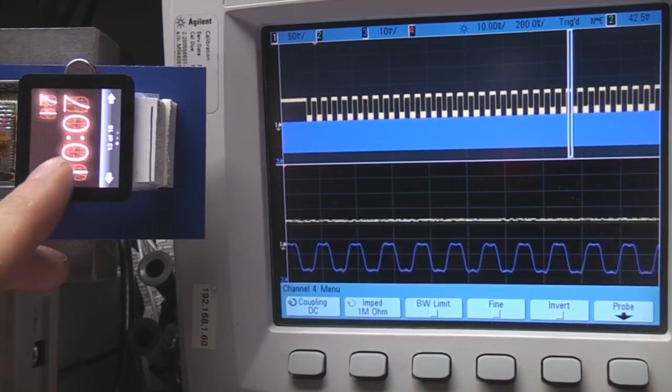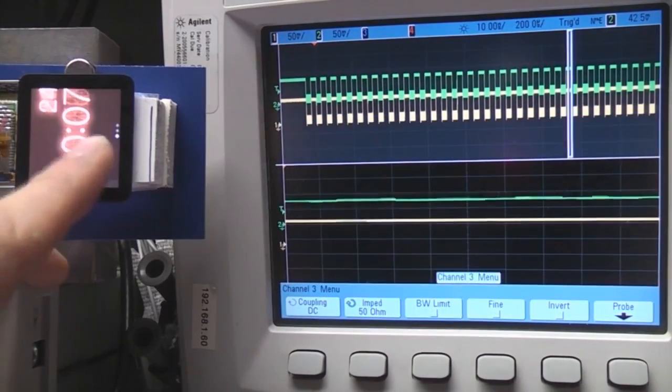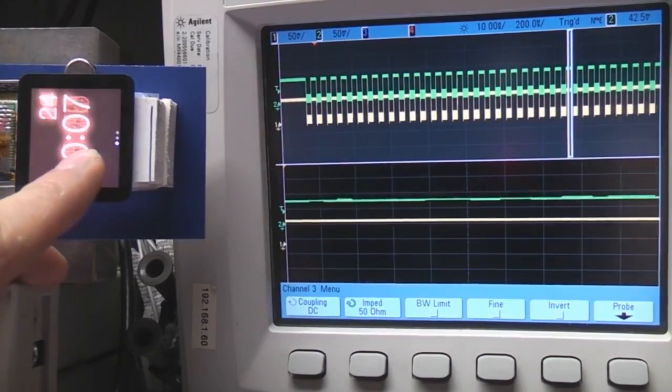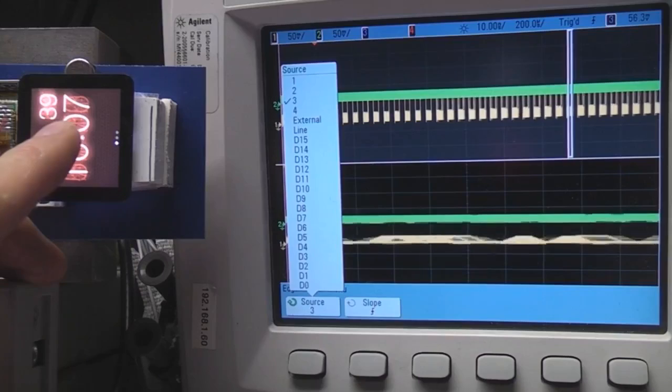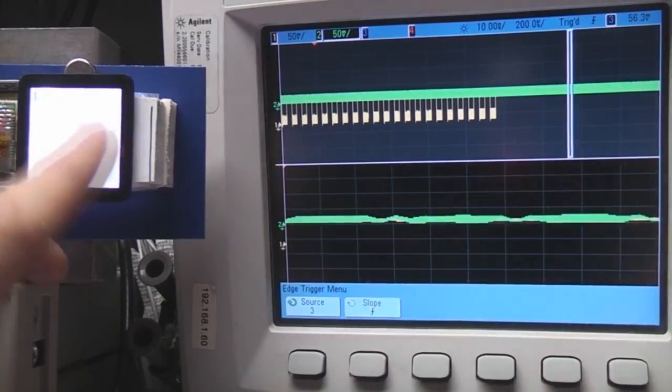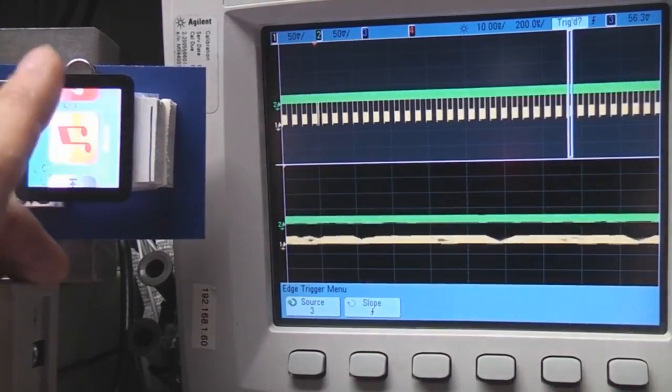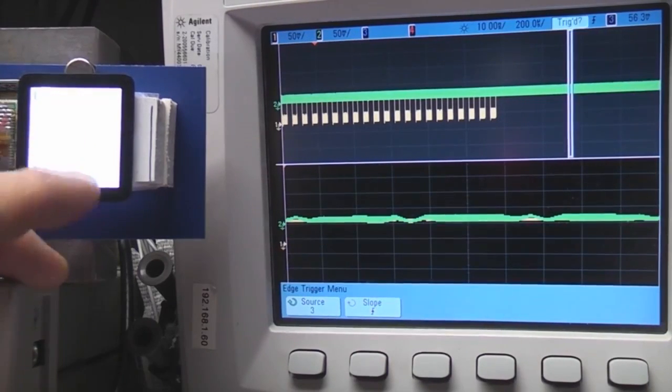This is just using channels one and three where we've got the full resolution. If I just change it so we're using channels one and two, I haven't changed any of the time base settings. So exactly the same, we're now getting much less resolution because when we're using a four channel scope in two channel mode, we've basically only got one A to D; the other one is just sitting there doing nothing.